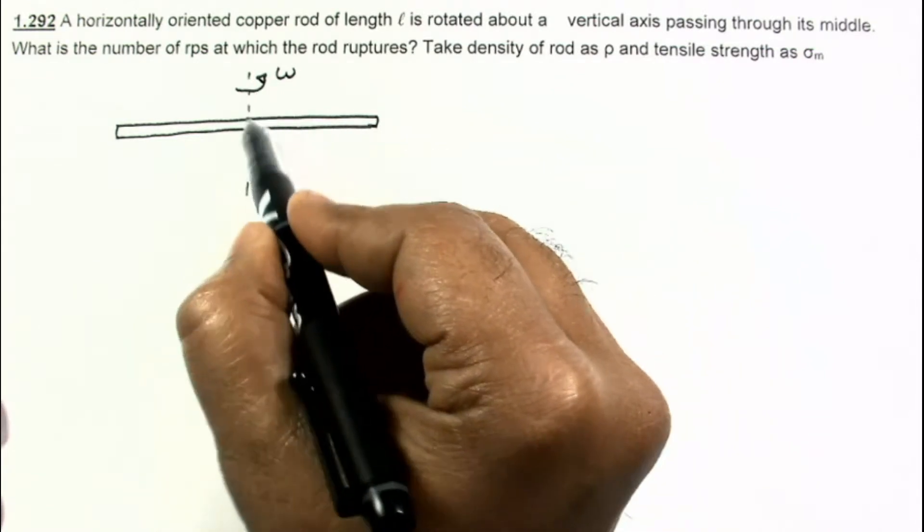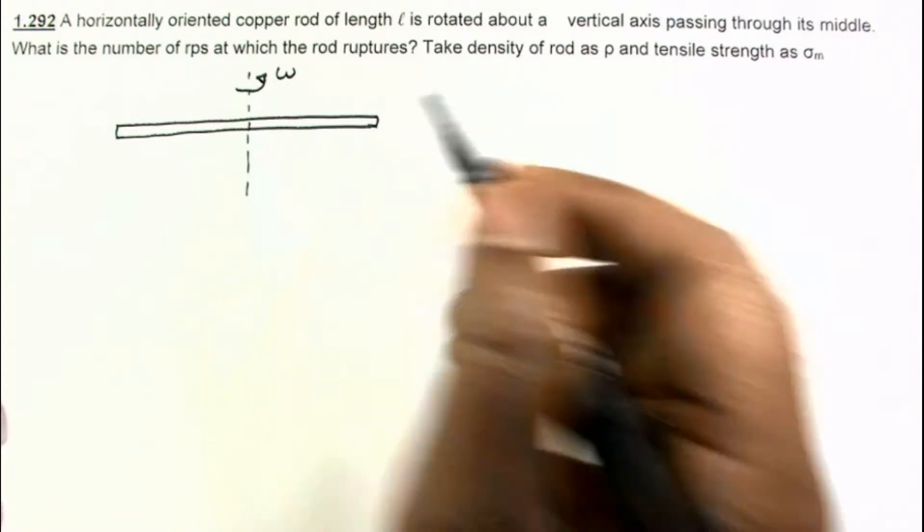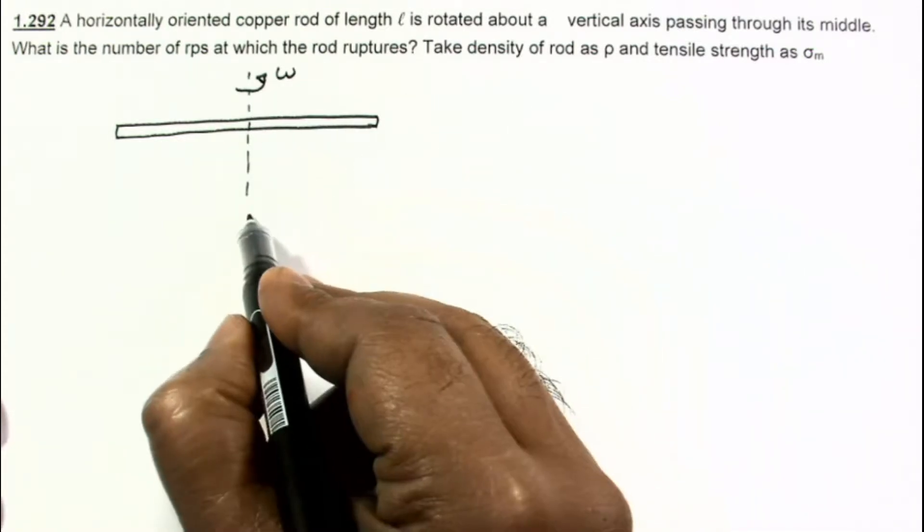You have to first find the tension in this rod, and tension is maximum at the location where this axis is. So I am breaking this rod in half.